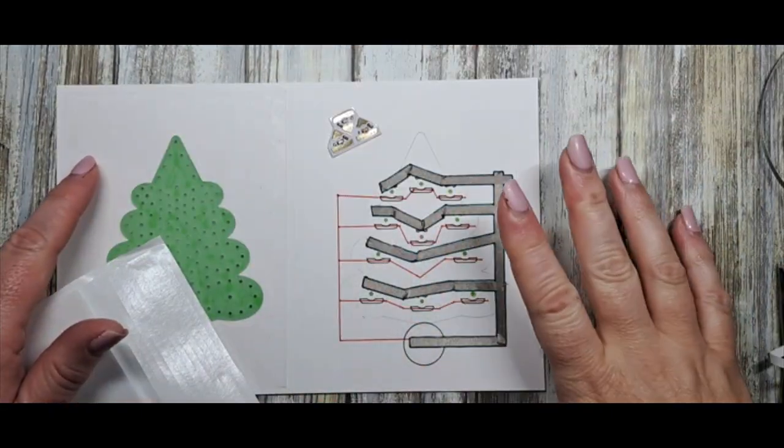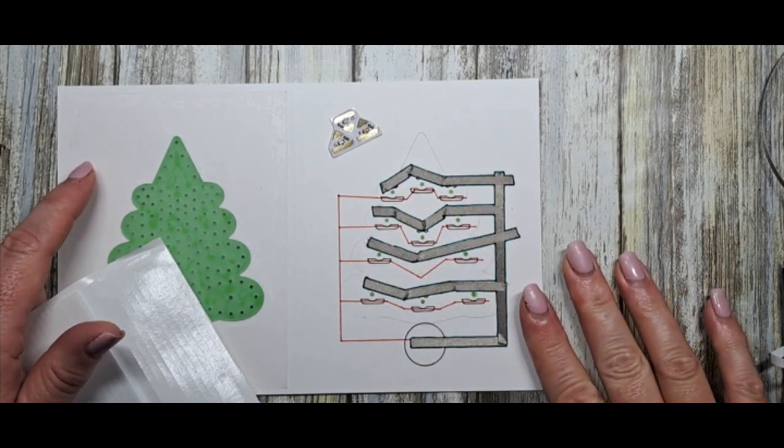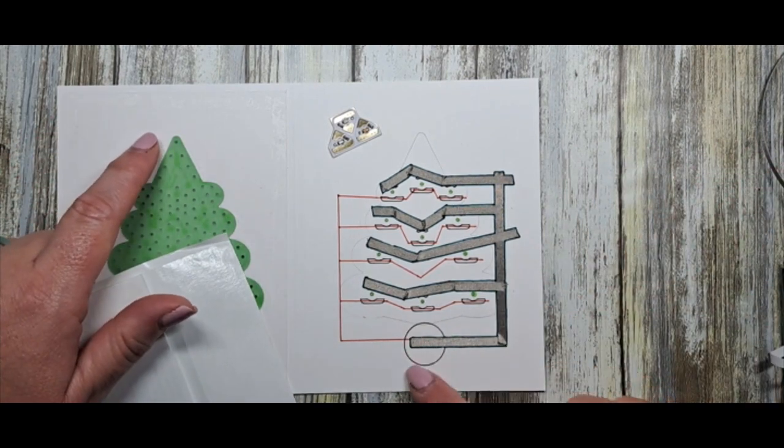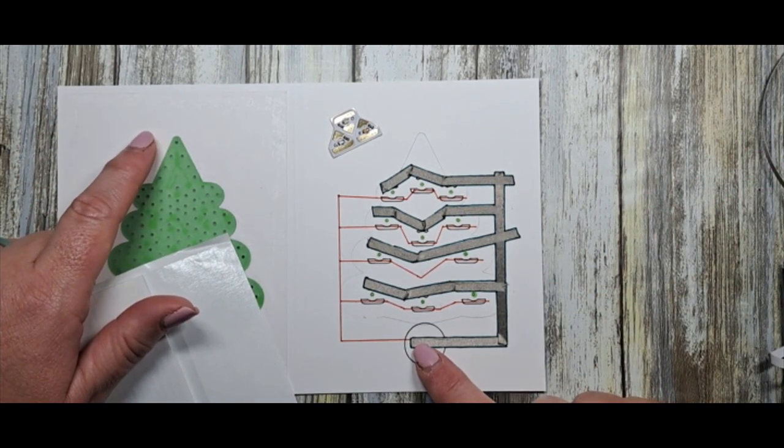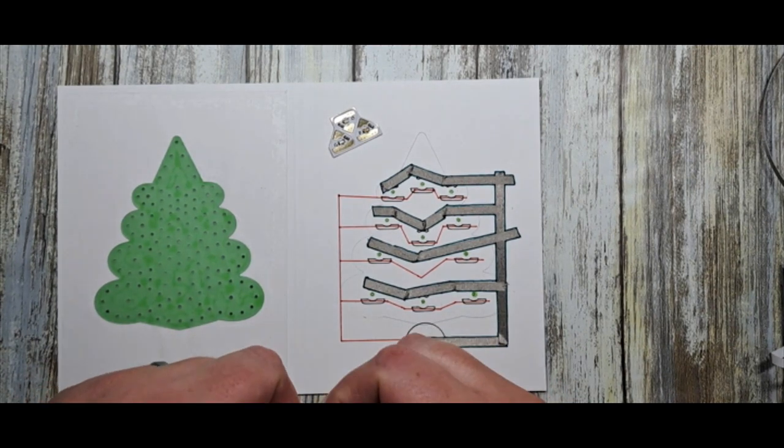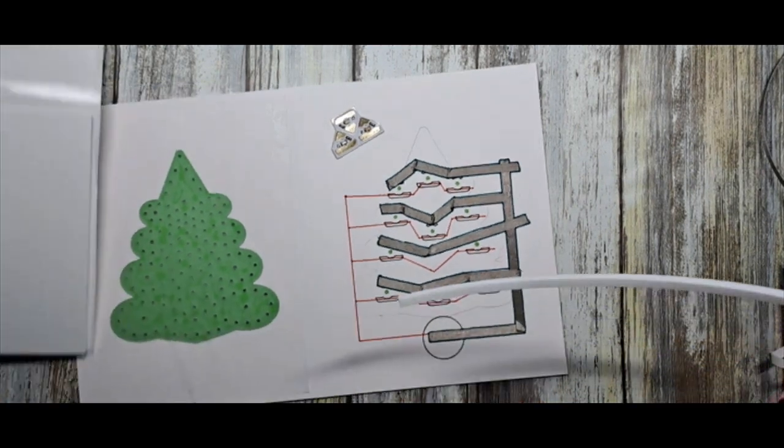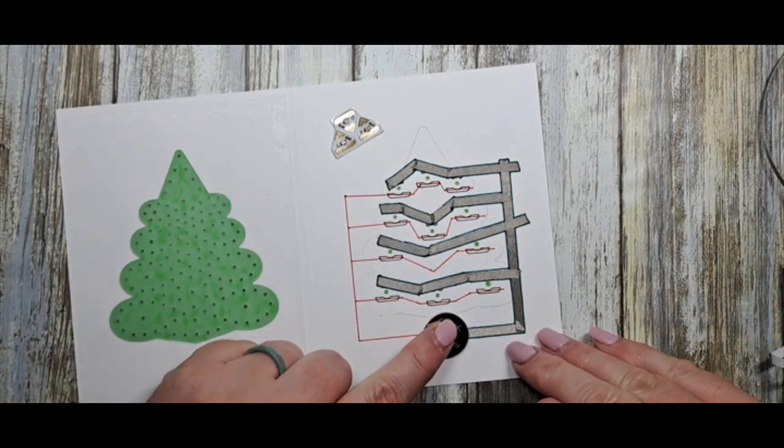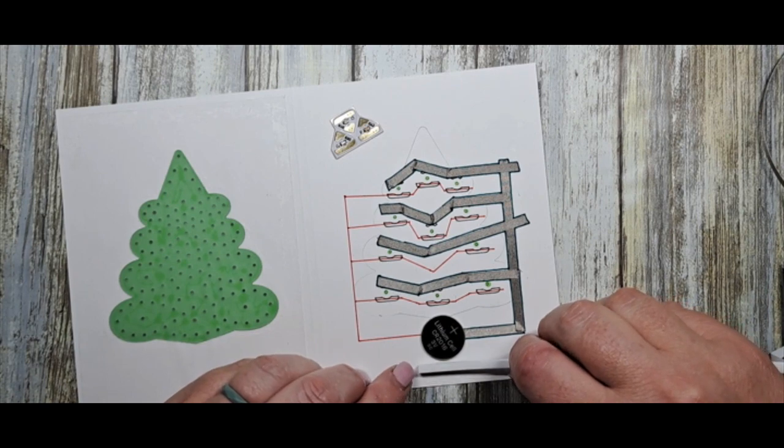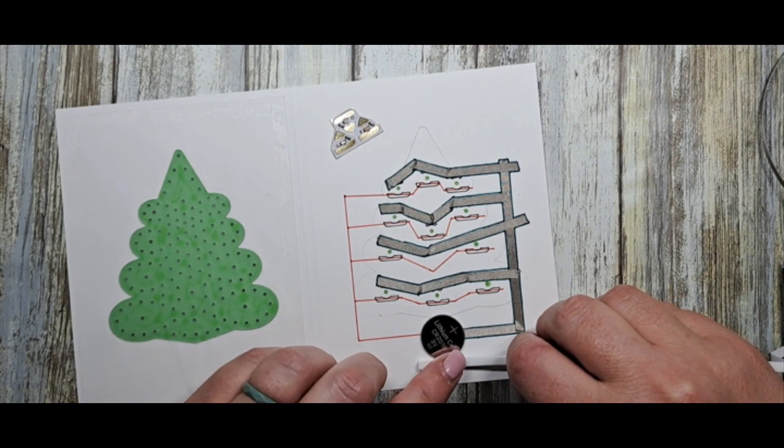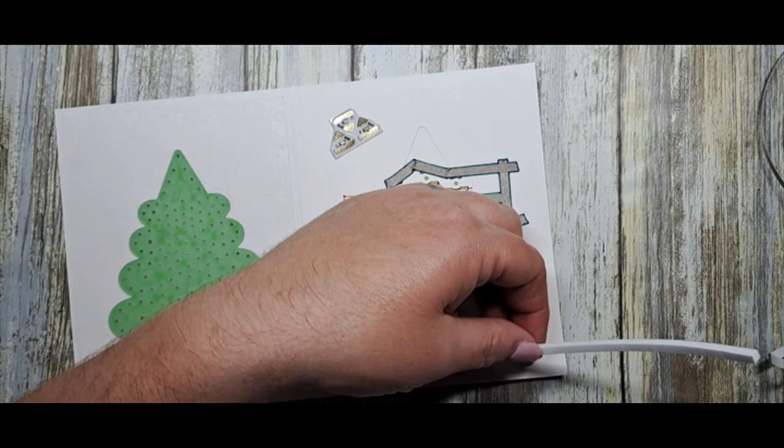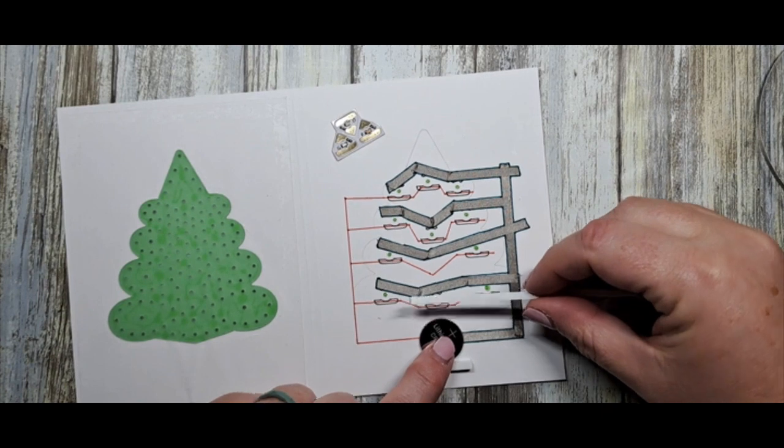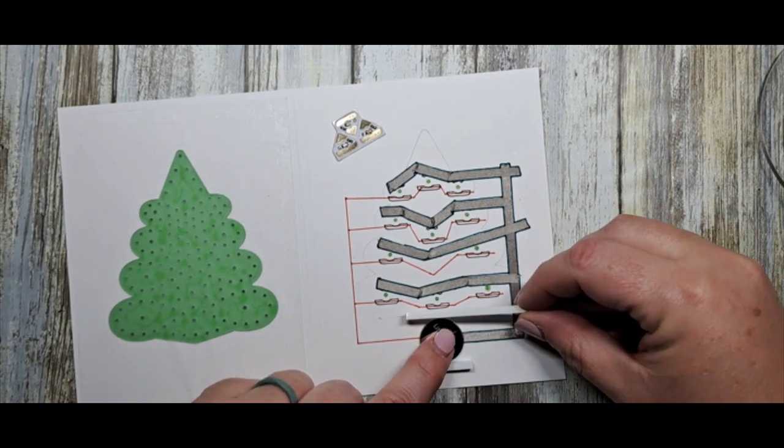And there is the negative side of our circuit all complete. Before we go and complete the positive side, we need to build ourselves a little housing to contain our battery. I'm going to use some three-dimensional foam and bring in our battery to ensure that the size is just right. I'm going to start by making basically a little box, and this just ensures that the battery doesn't go anywhere.